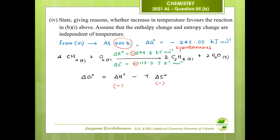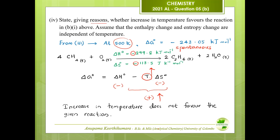For this reaction, the standard enthalpy change is negative and the standard entropy change is also negative, so the product T·ΔS is positive. As temperature increases, the positiveness of T·ΔS increases, causing ΔG to become more positive. When ΔG becomes positive the reaction is non-spontaneous. Therefore increasing temperature does not favor the given reaction, because with increasing temperature the product T·ΔS increases, making ΔG positive.